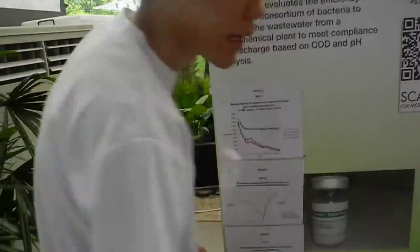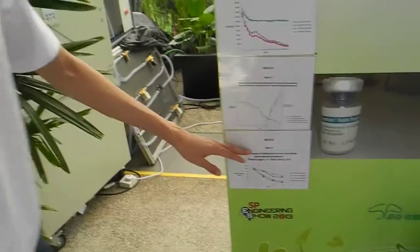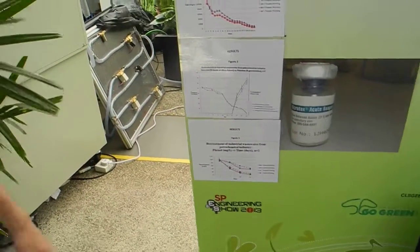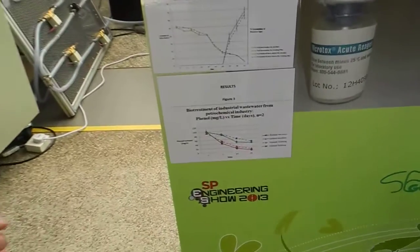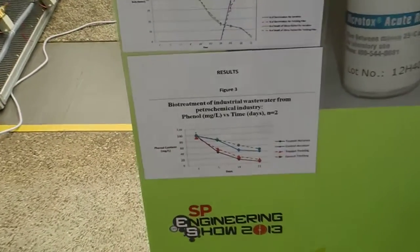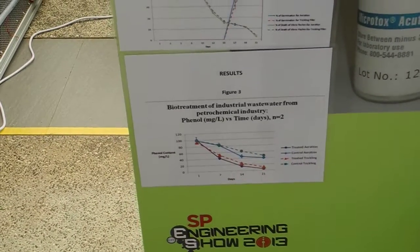The last test we've done is a Phenol test. Phenol is a toxic compound found to contribute to wastewater toxicity. Similar to the first graph, with the inoculation of bacteria we reduced the phenol level much more than without the inoculation of bacteria.